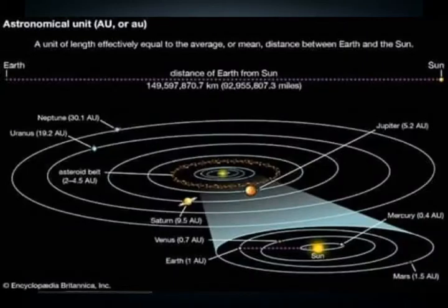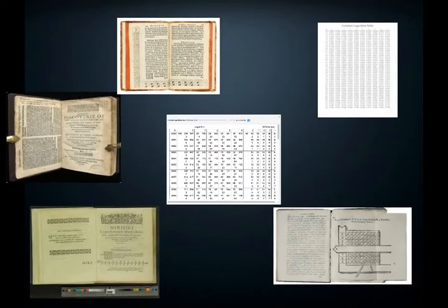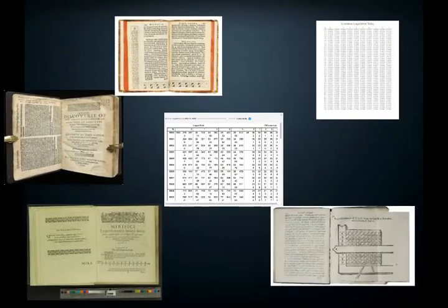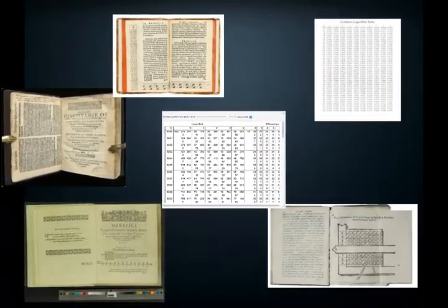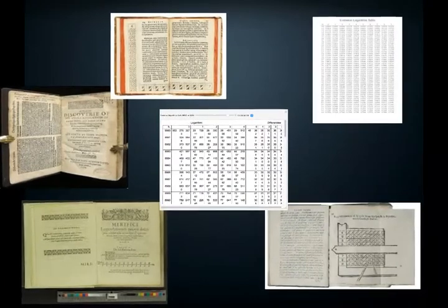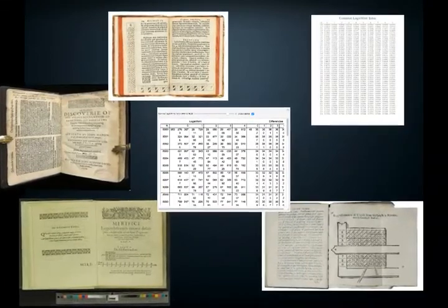His logarithms helped with trigonometric calculations in astronomy and navigation, even up to this day. A copy of Napier's 1614 work was sent to the professor of Gresham College, Henry Briggs. Briggs made Napier's method even easier by setting the log of 1 at 0.